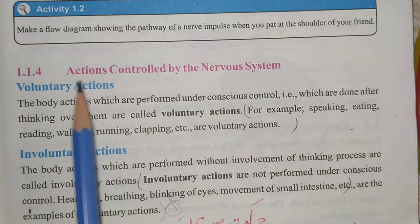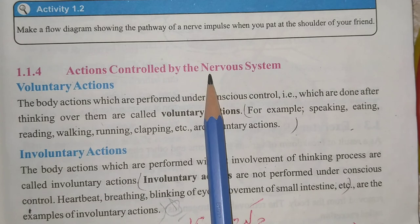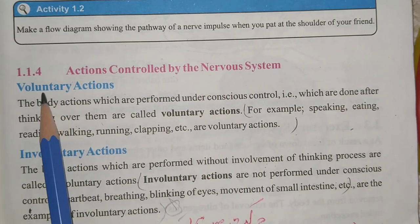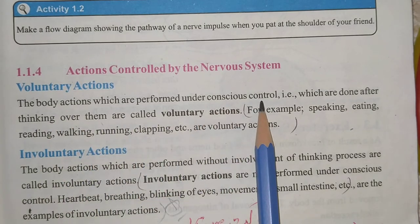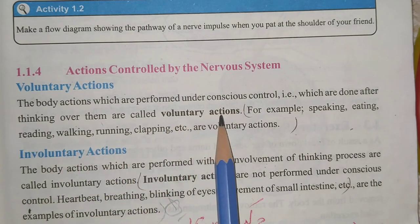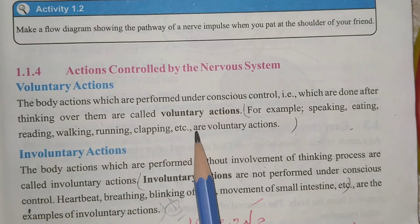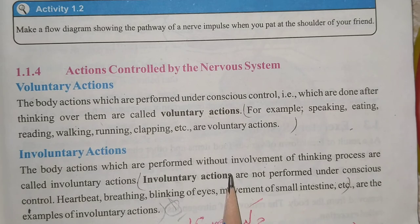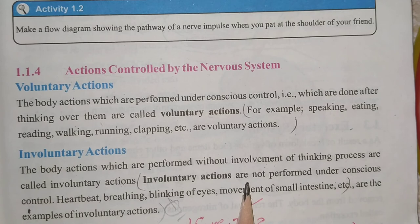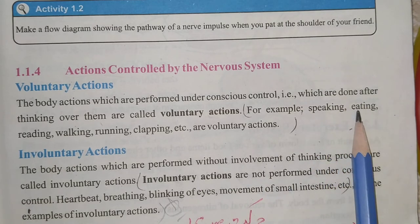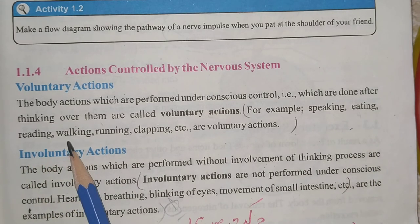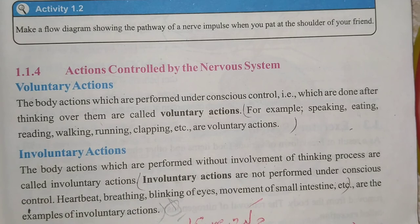Actions controlled by the nervous system: our nervous system controls voluntary and involuntary actions. Voluntary actions are the body actions which are performed under conscious control — actions done after thinking. For example, speaking, eating, running, walking, jumping, and clapping are voluntary actions. These are actions in which our thinking and conscious control are involved.